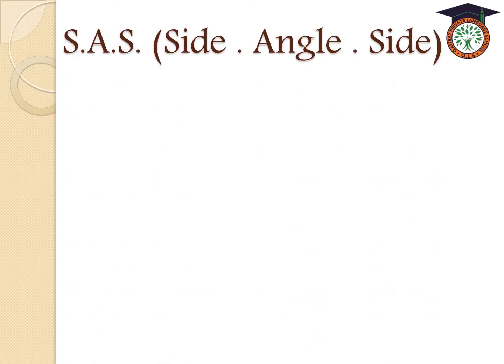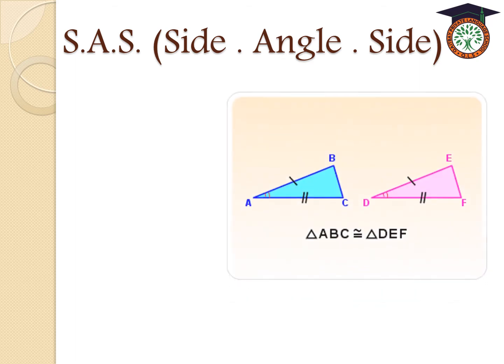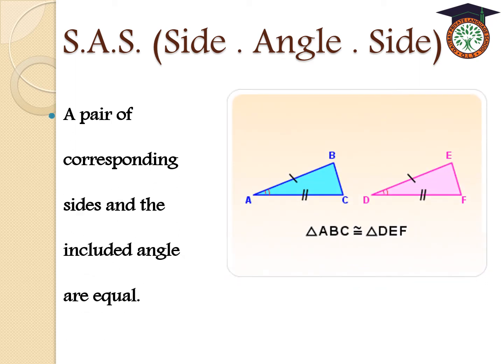The second case is SAS — Side-Angle-Side: a pair of corresponding sides and the included angle are equal. Here we have AC in the blue triangle equal to DF in the other triangle, and AB equals DE.